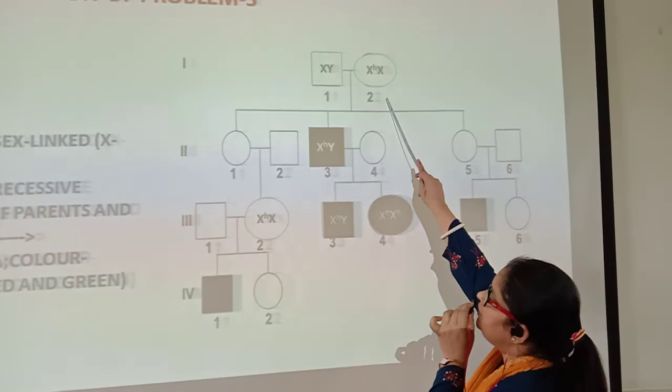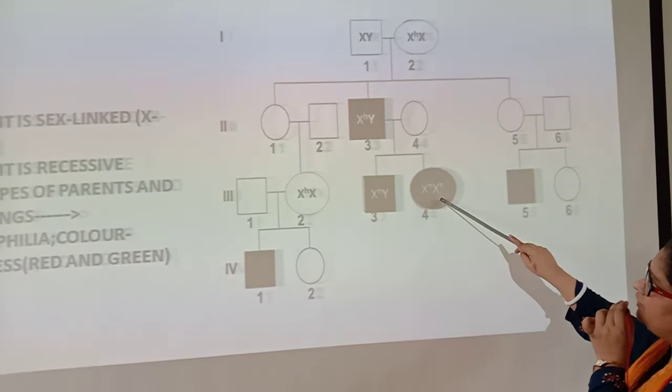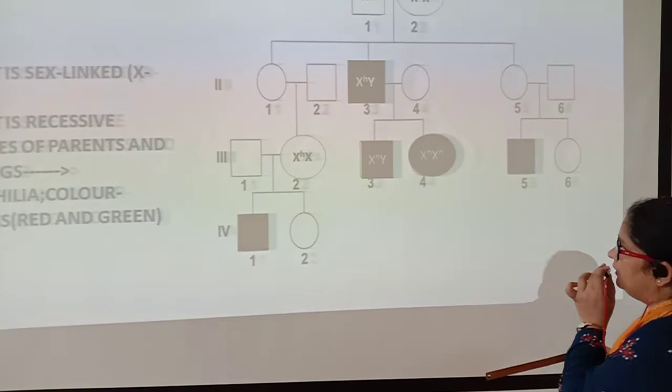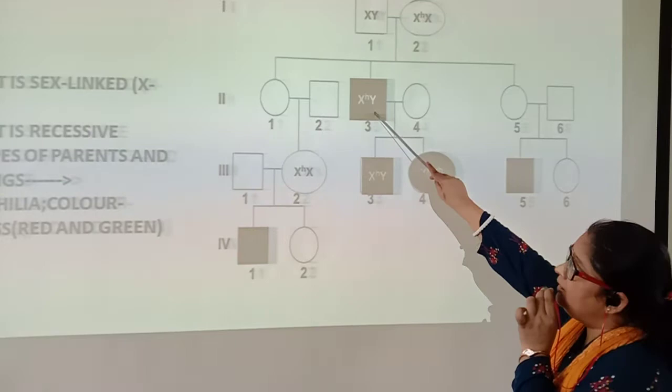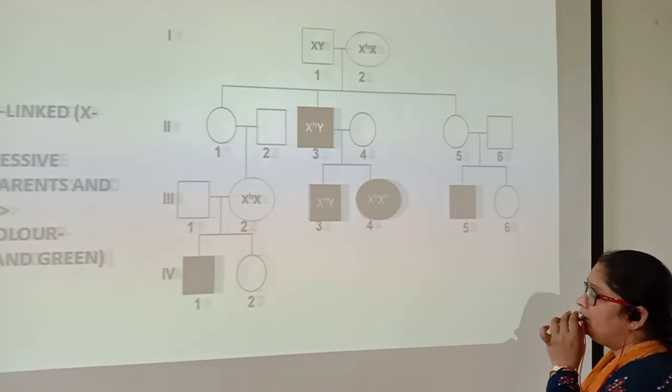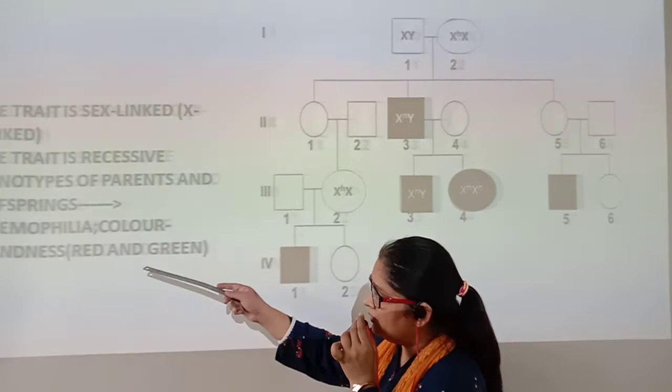A daughter becomes hemophilic only when the father is hemophilic and the mother is either hemophilic or a carrier of hemophilia. This is an X-linked recessive disorder. Examples include hemophilia, red-green color blindness, and other color vision defects.